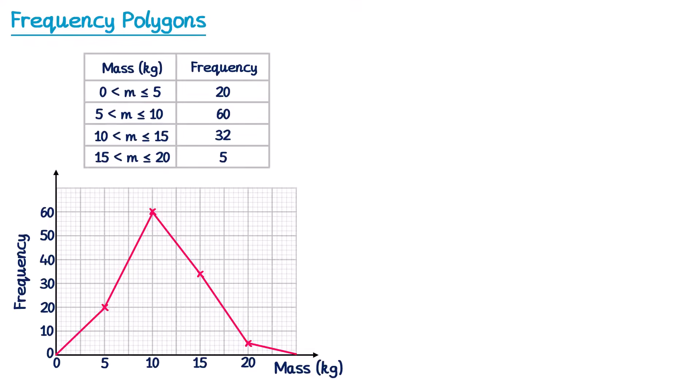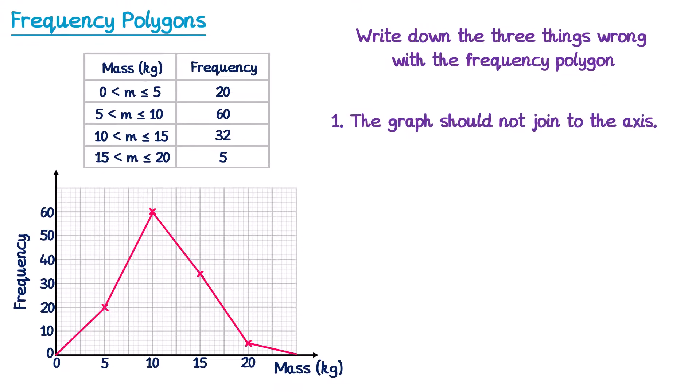The final question we're going to look at is a frequency polygon that's already been drawn for us, and you may be asked to criticise this diagram. So for this one there are actually three mistakes, and we need to find them and write them down. Perhaps the most obvious error for this frequency polygon is they've joined it up to the axis. We said earlier in the video that you don't do this. So for mistake number one we could write down the graph should not join to the axis.